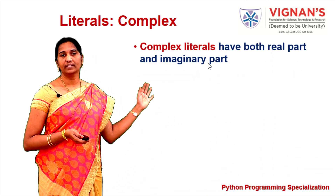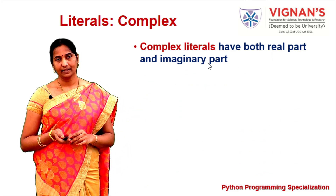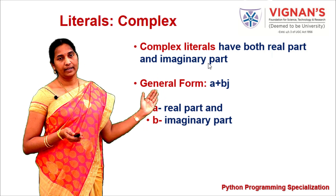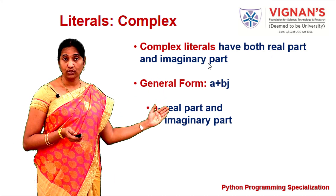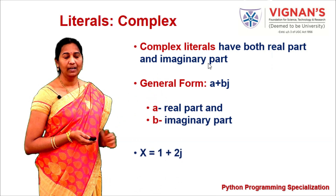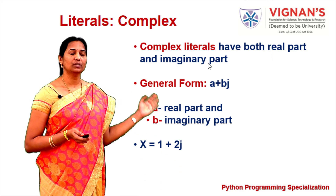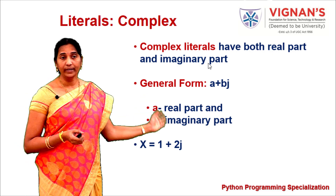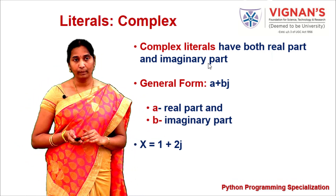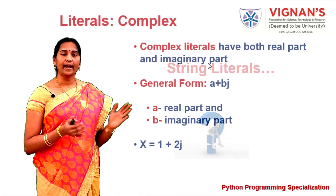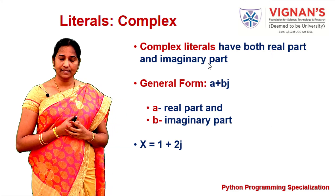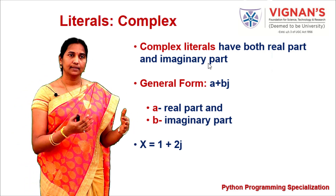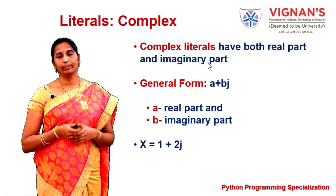Complex literals have both a real part and an imaginary part. The general form is a + bj, where a indicates the real part and b indicates the imaginary part. For example, x = 1 + 2j, where 1 is the real part and 2 is the imaginary part. So numeric literals include integers, floating point, and complex numbers.